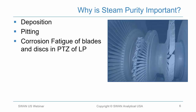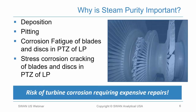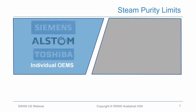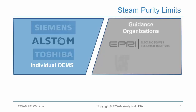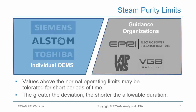Corrosive contaminants such as chlorides and sulfates can form deposits throughout the steam turbine. Those corrosive deposits lead to pitting during outage periods when the turbine is exposed to humid, oxygen-saturated air. When the unit is brought back online, mechanical stresses can cause cracks to form between those pits, leading to corrosion fatigue failure of blading and discs in the phase transition zone of the LP turbine, as well as stress corrosion cracking. The risk of turbine corrosion requiring expensive repairs is significant if steam purity is not meeting OEM and industry guidelines.